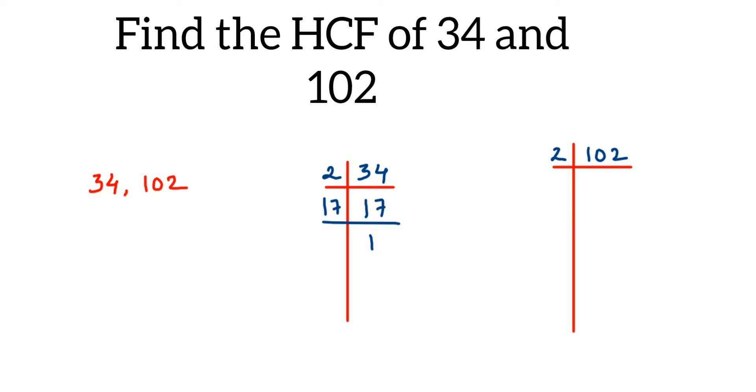Now we have 102. It is an even number, it goes in the two table. Two fives are 10, two ones are two, we got 51. 51 goes in the three table. Three ones are three, two is left, so that makes a number 21. Three sevens are 21.